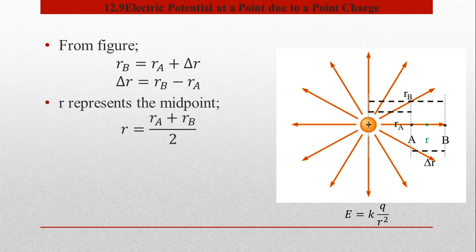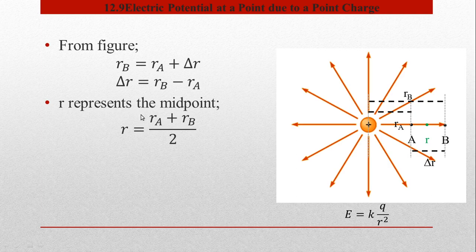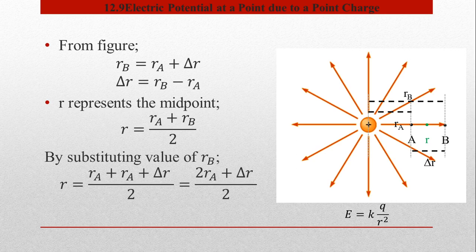اب ہم ایک اور point R consider کرتے ہیں جو کہ A اور B کے درمیان mid point ہے۔ Mid point formula use کرتے ہوئے اس کی value R_A plus R_B divided by 2 ہوگی۔ ہم یہ سب اس لیے کر رہے ہیں کیونکہ ہم electric field کو R² سے independent کرنا چاہتے ہیں اور A اور B کے درمیان اس کی specific value لینا چاہتے ہیں۔